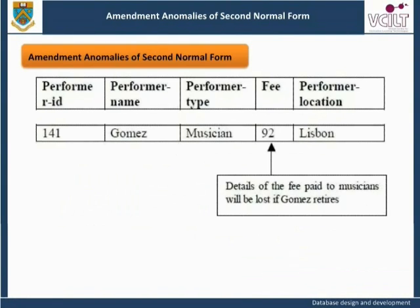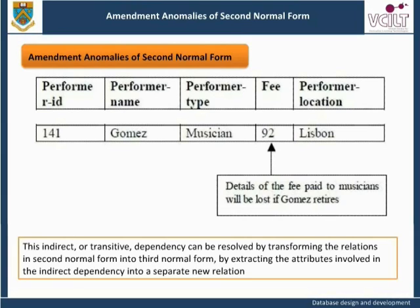Deletion Anomalies of Second Normal Form: If Gomez, the only musician in the relation, decides to retire, we will lose the information regarding the fee of 92 paid to musicians. All these anomalies are caused by the fee paid to the performer being dependent on the performer type and not directly on the primary key performer ID. This indirect, or transitive, dependency can be resolved by transforming the relation in second normal form into third normal form, by extracting the attributes involved in the indirect dependency into a separate new relation.